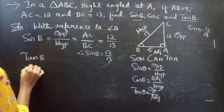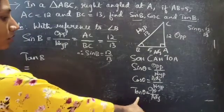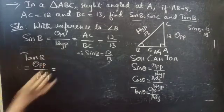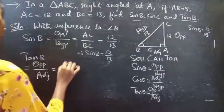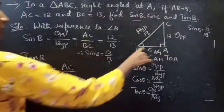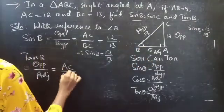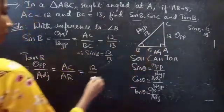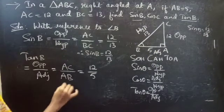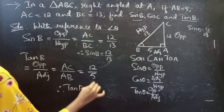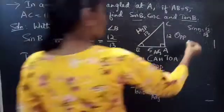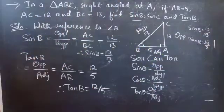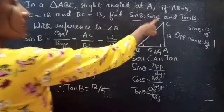And tan B: using TOA, tan theta equals opposite by adjacent. With reference to angle B, the opposite side is AC and the adjacent side is AB. We have AC equals 12 and AB equals 5. Therefore tan B equals 12 by 5. Now with reference to angle C we have to find the value of cos C.